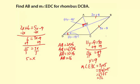So here are my answers. AB equals 16, and the measure of angle EDC is 32 degrees.